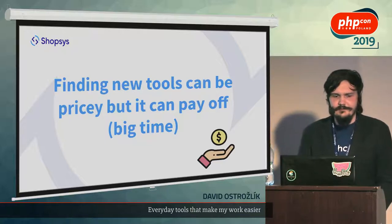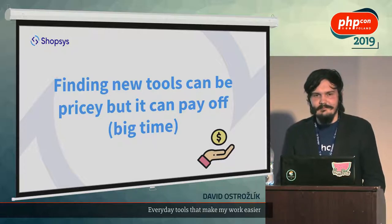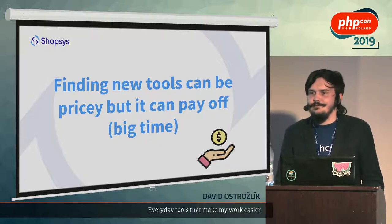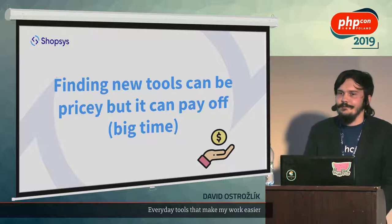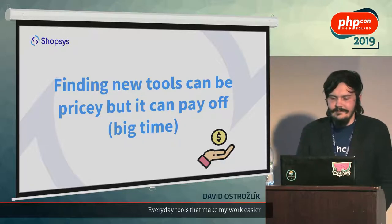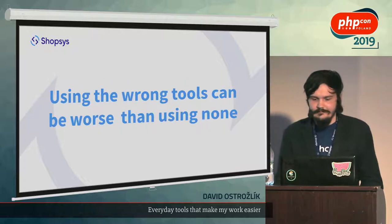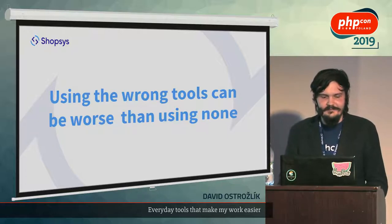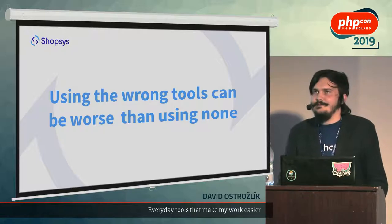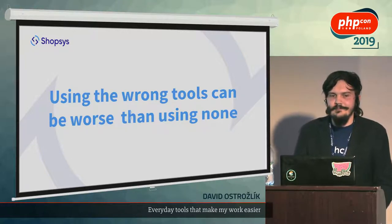Finding new tools can cost a lot of time. Like if I would want to use some new CI, there are a lot of options and you need to compare them — it just takes a lot of time. But after you get the best one for your needs, it can really pay off. And the last point — I'm just repeating myself here — is that using the wrong tool can be worse than using none. Because if you have automated tests which are wrong, they will take seven times more time than if you would do it without them and need to change them every time.